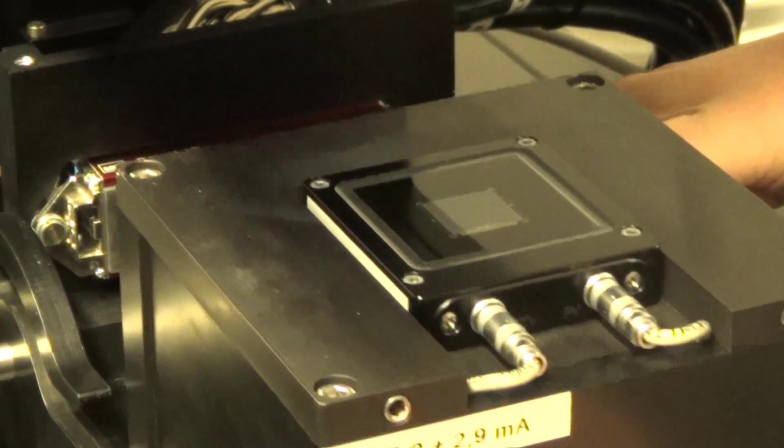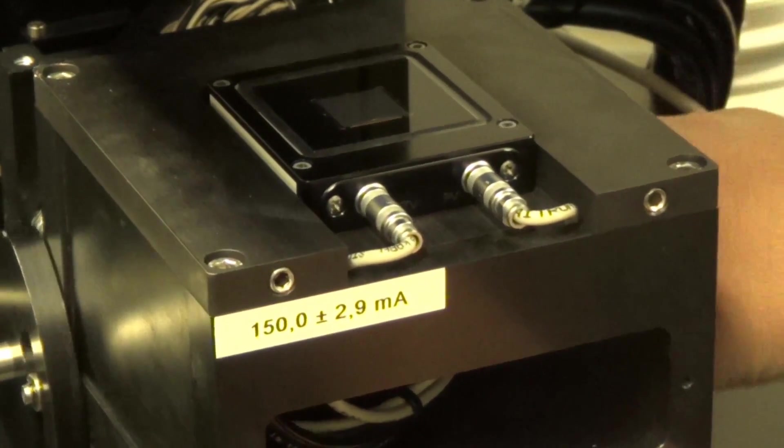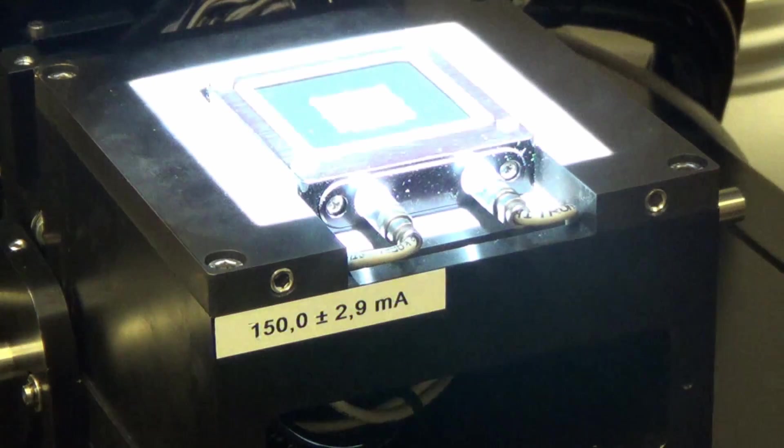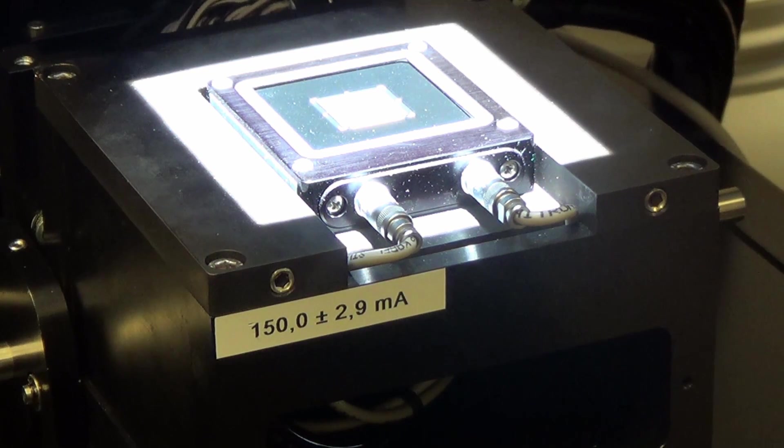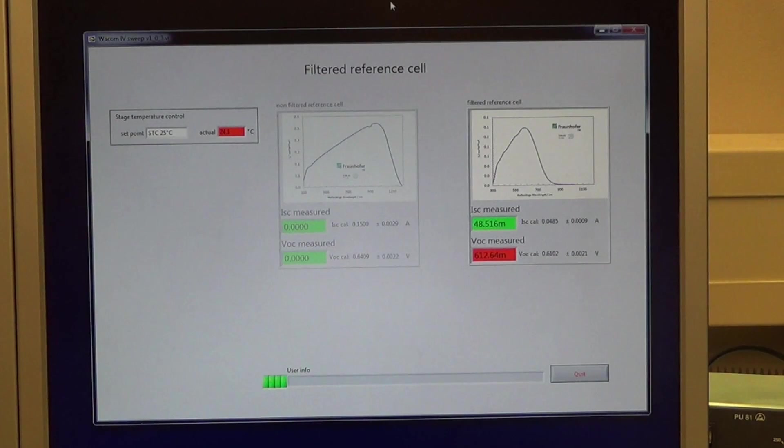First, the spectral intensity of the lamps will be checked with two reference cells. The calibrated spectral response gives little room for error since the open-circuit voltage and short-circuit current are allowed to have only a small deviation. When the stage is at the right temperature, these values should be met or changes to the lamp power should be made.